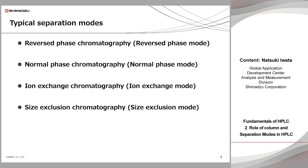Since the electronegativities of compounds are different, the interactions between target compounds and the stationary phase are also different. That's why anionic compounds can be separated. This mode is called anion exchange mode. Another mode, cationic exchange mode, employs an anionic stationary phase to separate the cationic target compounds. These two modes are called ion exchange modes. The last mode, size exclusion mode, does not use chemical interaction. In this mode, the target compounds are separated by their solvated sizes.